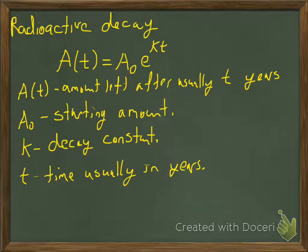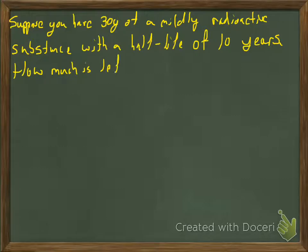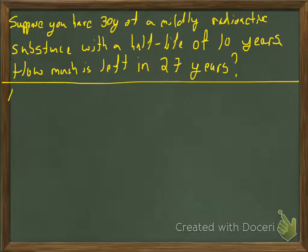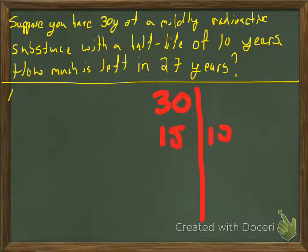Let's do an example. Suppose we have 30 grams of some mildly radioactive substance and the half-life is 10 years. That means it takes 10 years for half the substance to decay. Starting with 30 grams, after 10 years we have 15, after 20 years we have 7.5 grams, and so on — you just keep dividing by two.